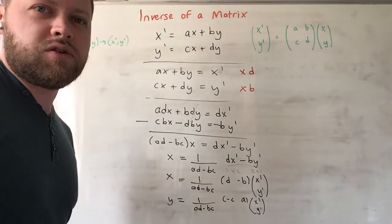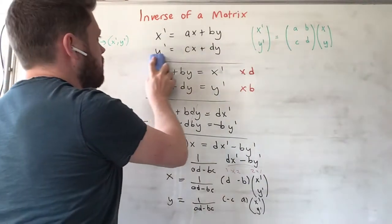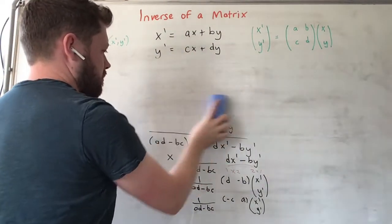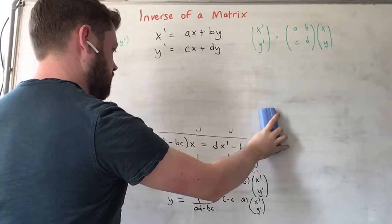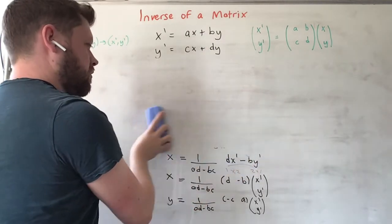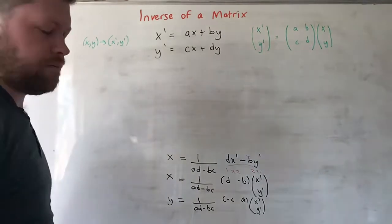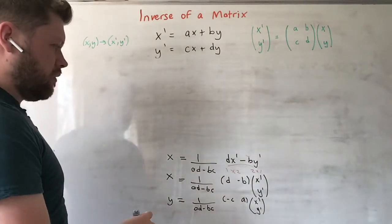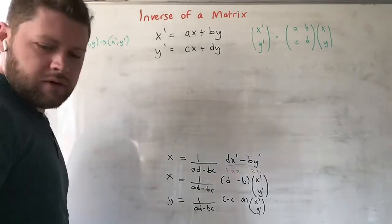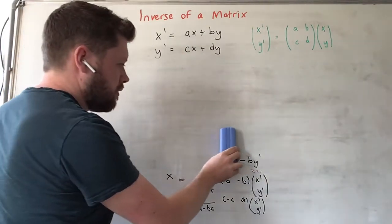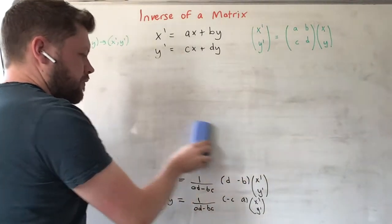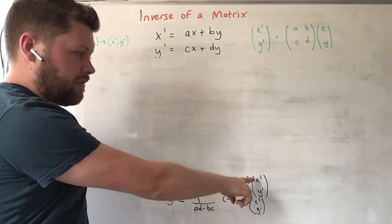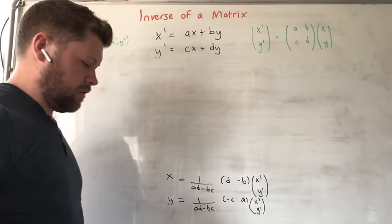Next we're going to combine those two answers into one matrix equation. So I will get rid of these but leave these two at the bottom. These are our two expressions for x and y in terms of x' and y'.